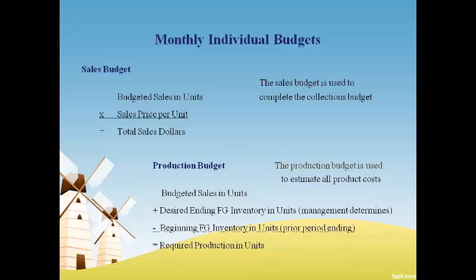The production budget uses the sales in units and the finished goods inventory to determine the number of units that must be produced. Ending inventory is added because this is the extra amount that must be produced to have units left in the warehouse. The beginning finished goods are subtracted because they are already in the warehouse and do not need to be produced. The production budget is the starting point for determining the three product cost budgets.